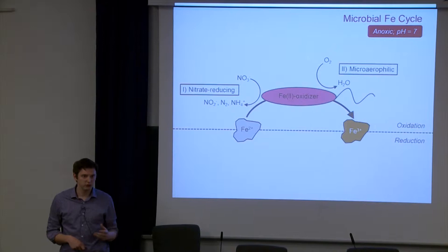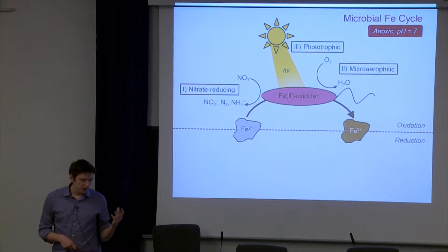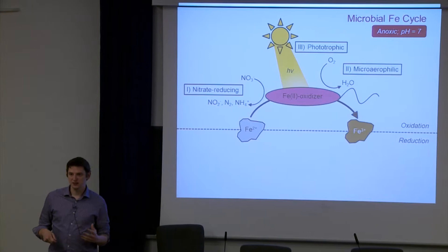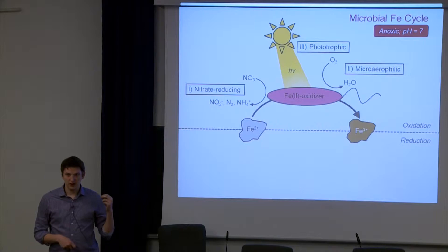Microaerophilic bacteria require micromolar concentrations of oxygen and outcompete the abiotic oxidation, leading to microbial oxidation of iron. These sometimes form twisted stalks or sheaths. Finally, the one I'm primarily most interested in is the phototrophic bacteria. These require light, and in the presence of light they're able to oxidize the iron 2, leading to precipitation of iron 3 minerals.